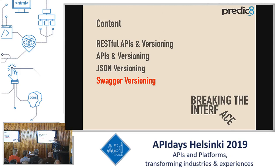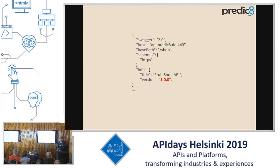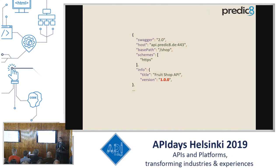Let's continue with Swagger versioning. Inside Swagger documents there is a version number with components: major, minor, and bugfix. We've heard that you usually don't use bugfix versions inside the interface path. But this version is not in the path, so you can increment the bugfix number in Swagger if you correct a spelling or something like that. It's a good idea to have all three parts of the version ID here.